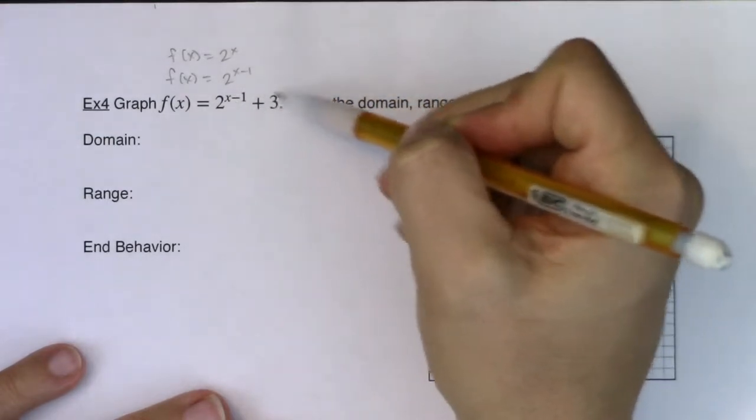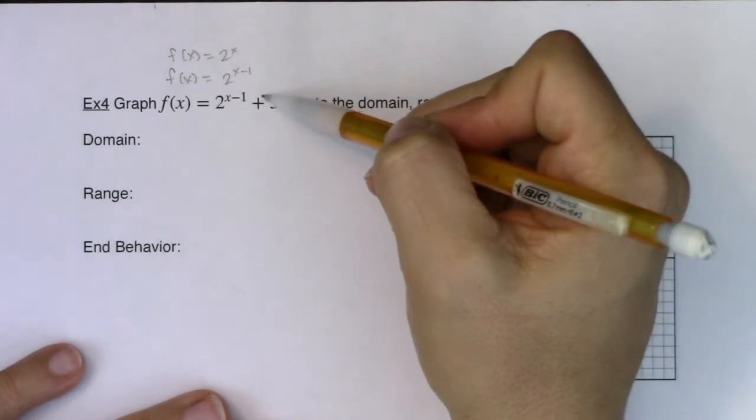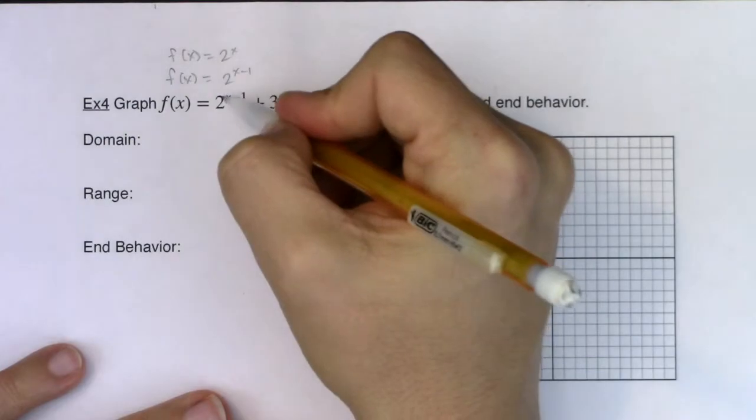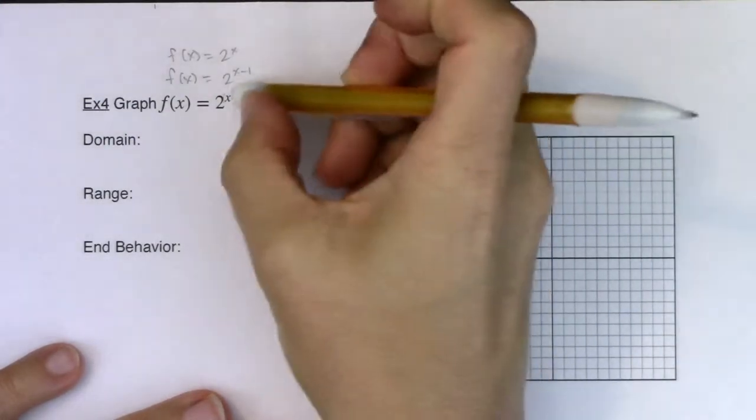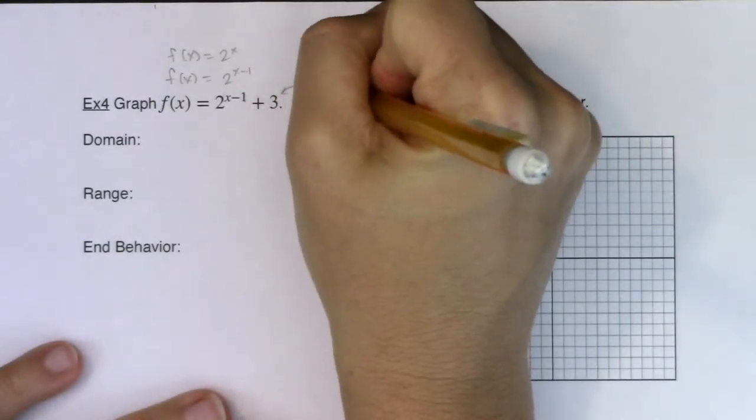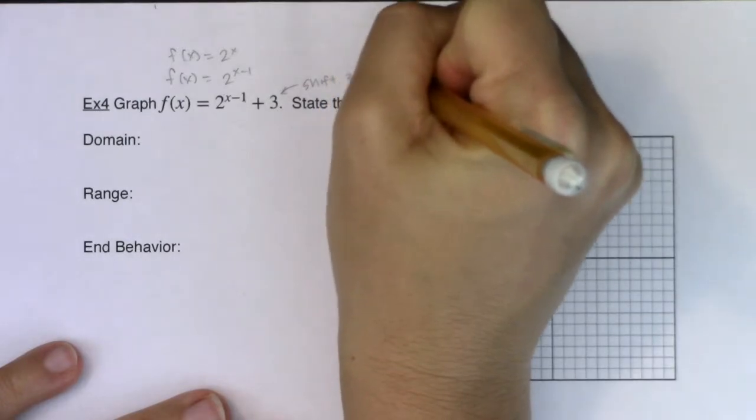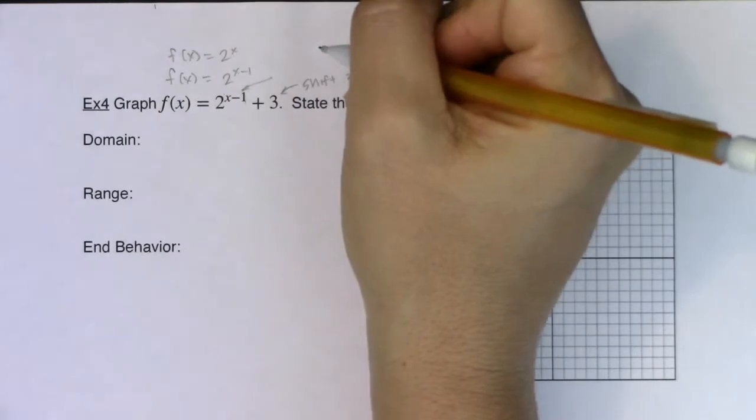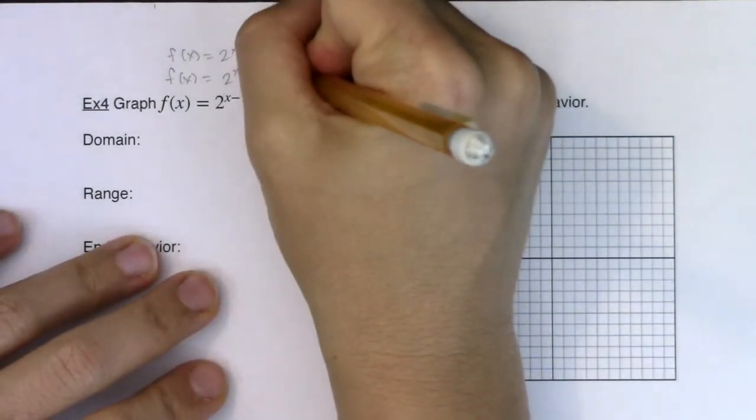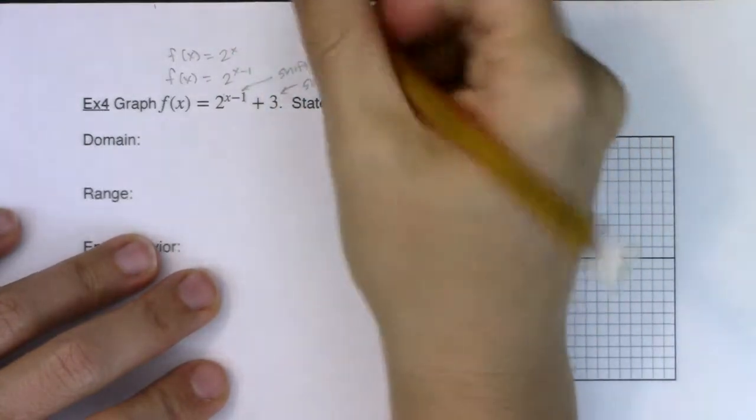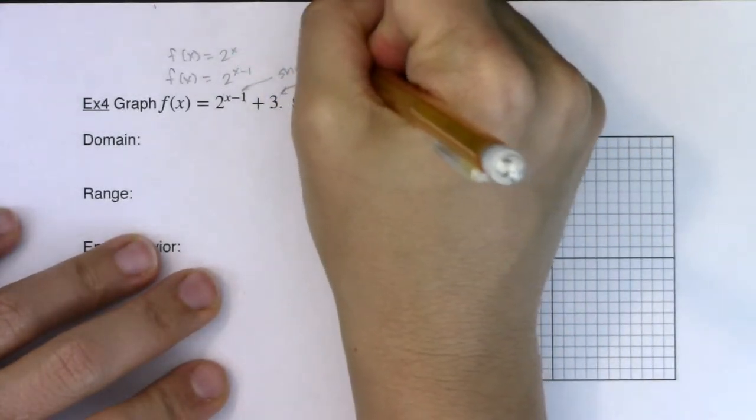And now we have this plus 3 out here. And when you're adding or subtracting a number, and it's outside those grouping symbols, again that binomial has a grouping symbol. But when it's outside the grouping symbols, it'll either move you up and down. So this is going to shift us 3 units up. Where this minus 1 here was going to shift us 1 unit to the right.